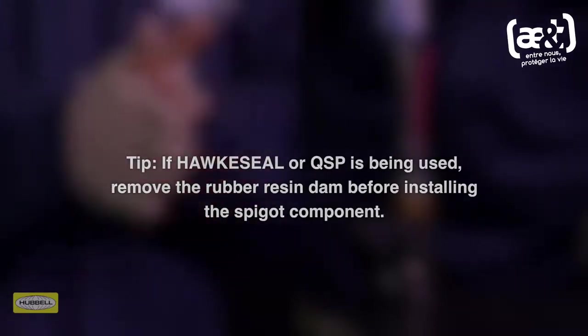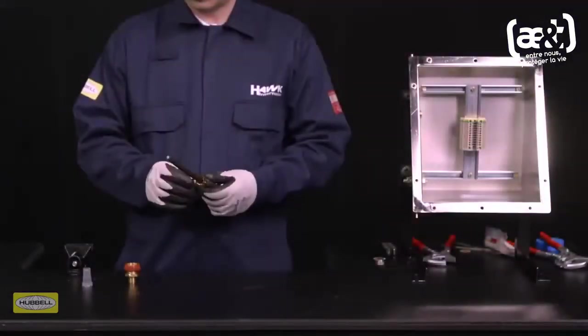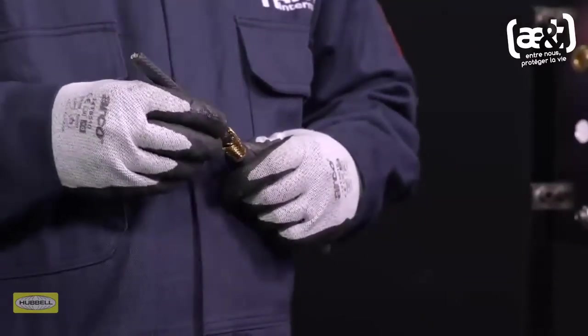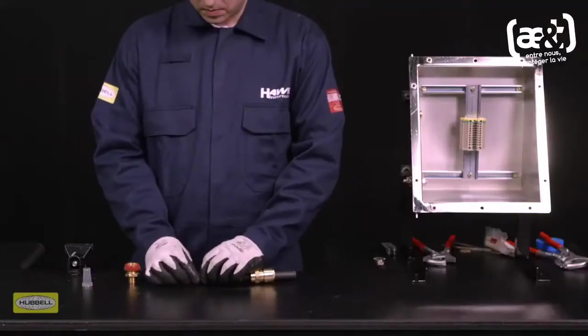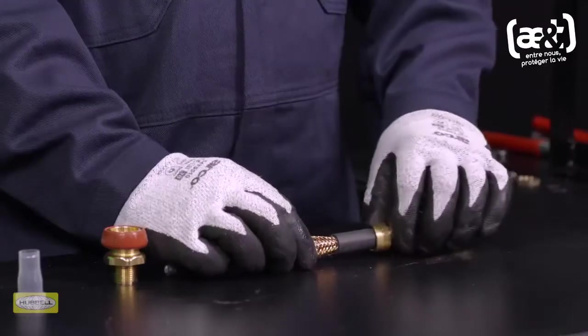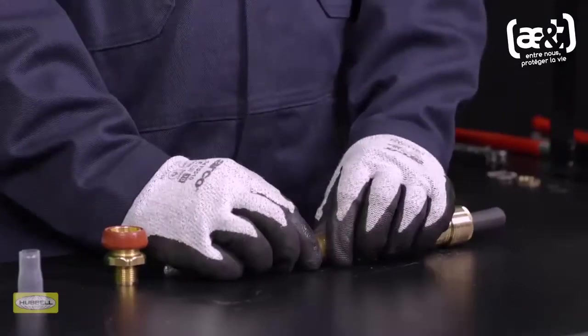Slide the spigot over the cable, taking care not to damage the rubber resin dam. Push the armor or braid up to the spigot shoulder, sliding the clamping ring up to the armor or braid by hand.